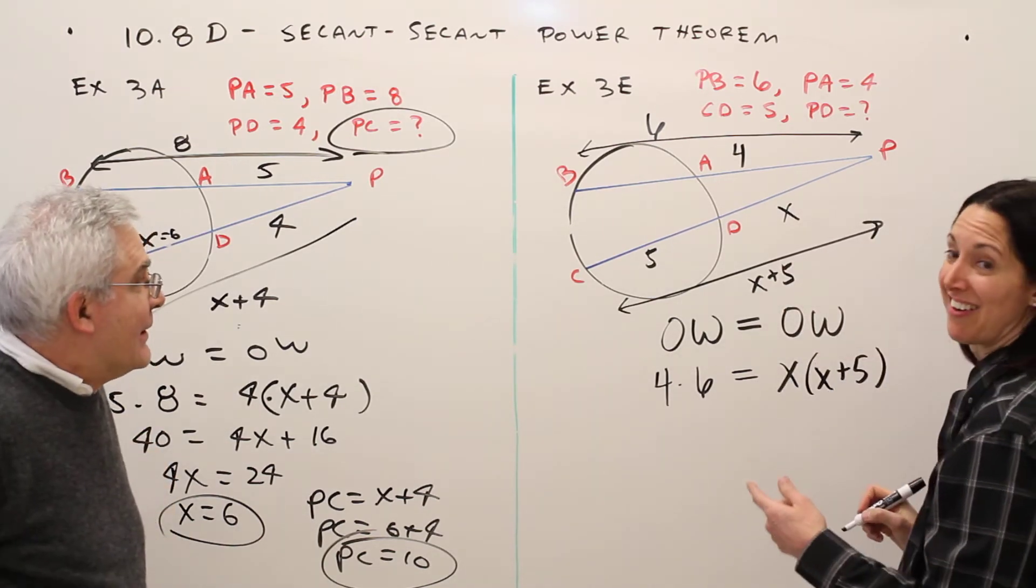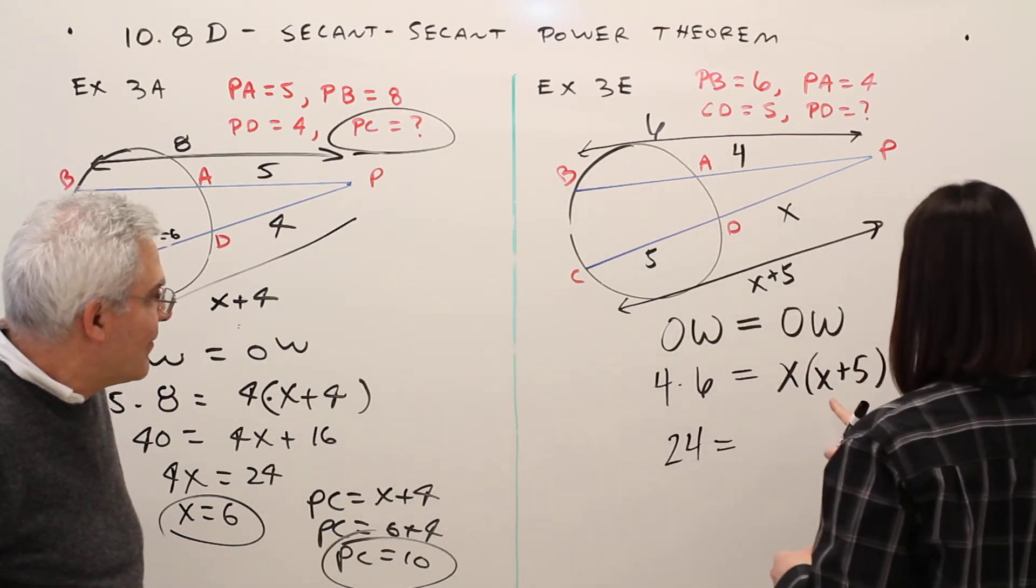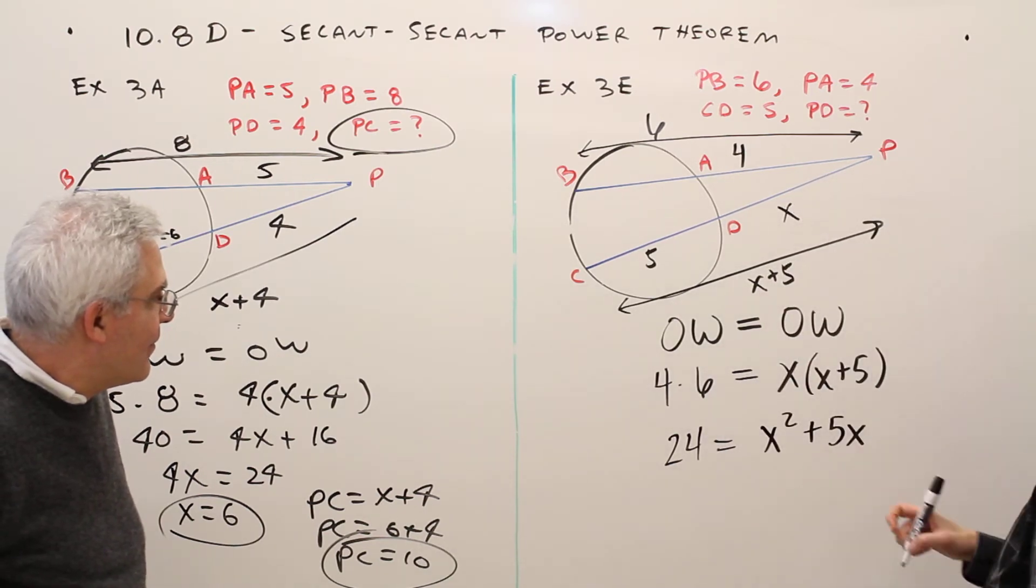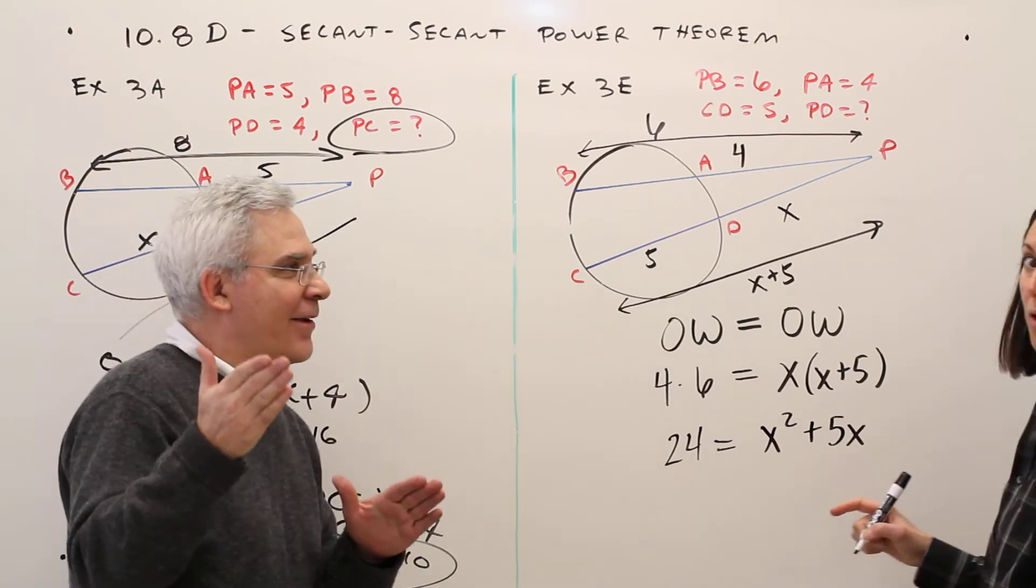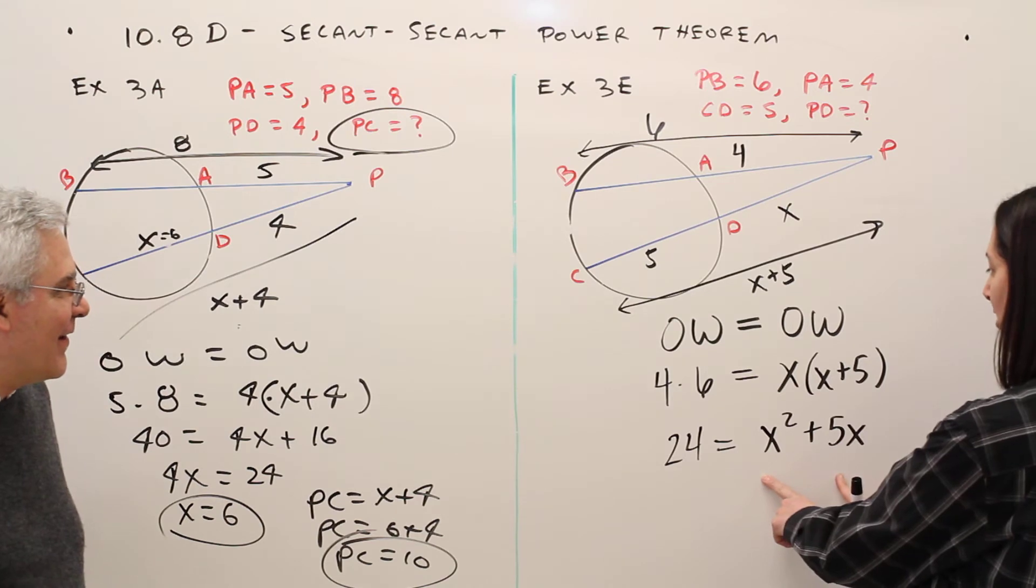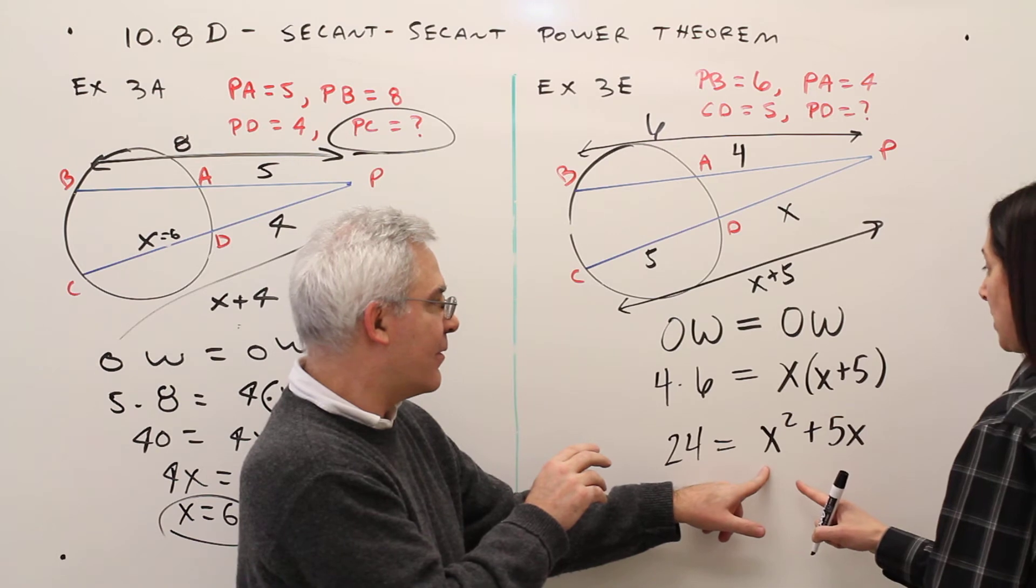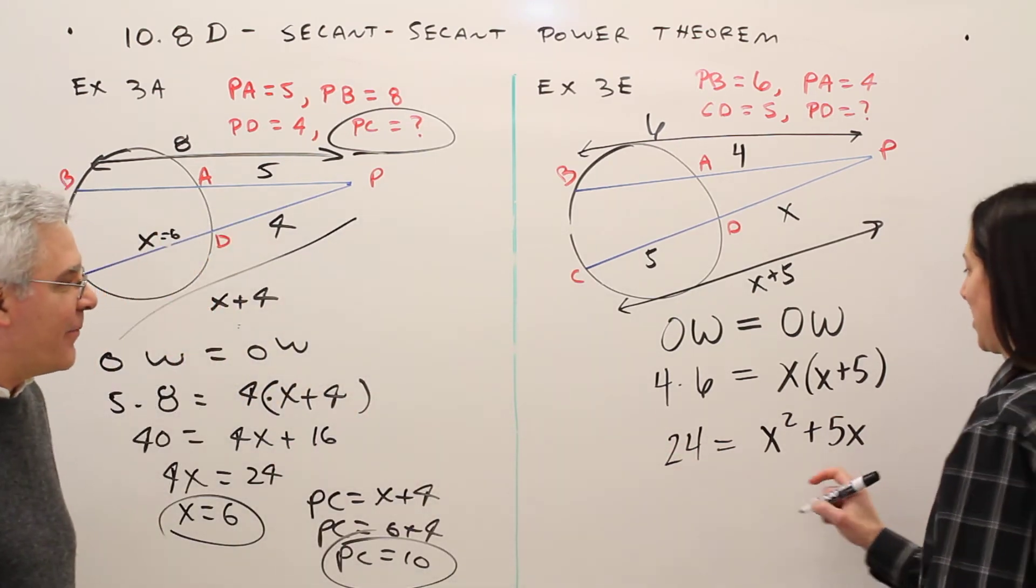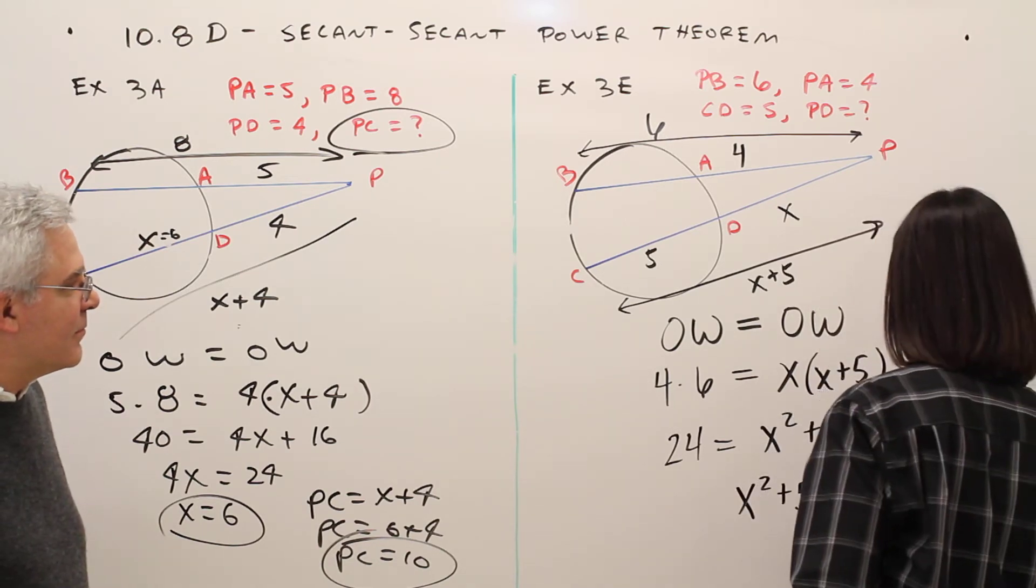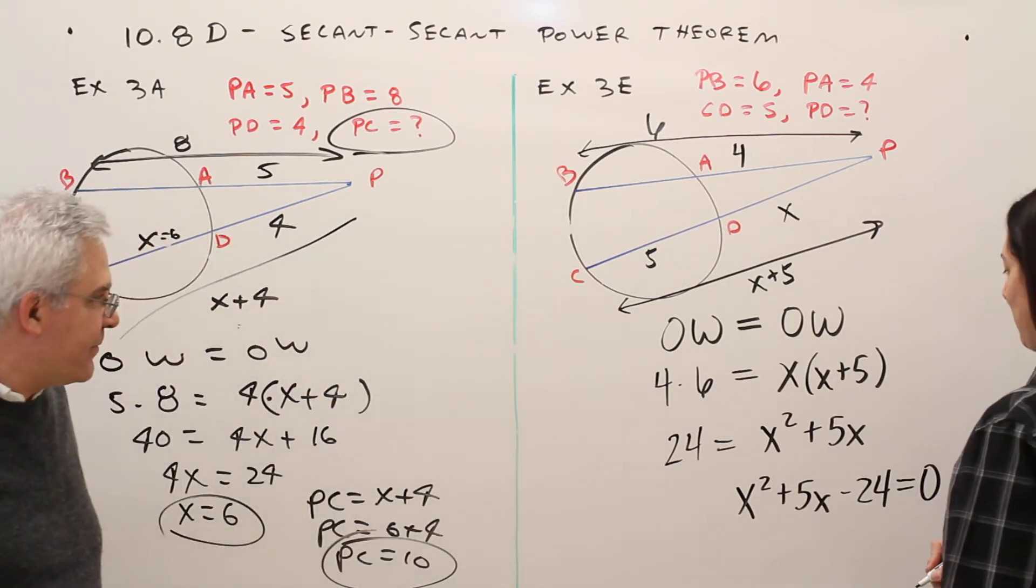Oh my gosh. I think mine's harder than his, just saying. Alright. So I've got 24 equals. If I distribute the X, I've got X squared plus 5X. So it looks like I've got a quadratic here. Let's get this set equal to zero. I usually bring the stuff over there because I like the positive. So X squared plus 5X, I'm going to subtract that 24. Are we okay if I put my equals zero over there? You're good.